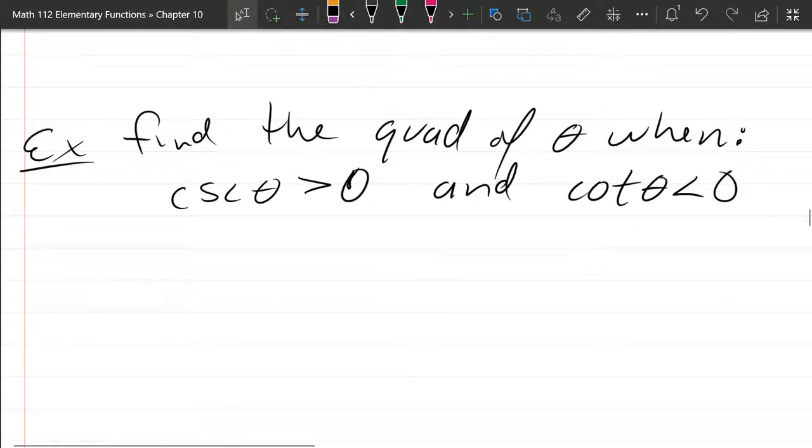So we have our next problem. We want to know the quadrant of theta when cosecant is positive and cotangent is negative.